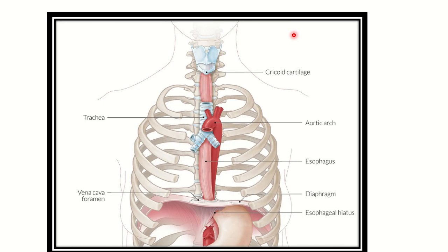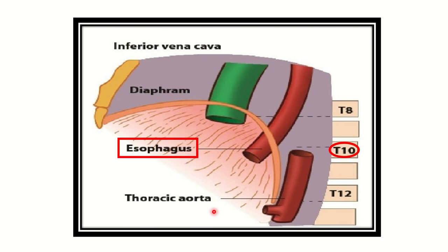Here we can see different structures in the figure. First, this is the trachea, and then the esophagus. We can see it passes into the abdominal cavity from the thorax through the diaphragm. We can also see another structure — this is the aorta, which also enters into the abdomen. So we have to find out at which vertebral level the esophagus enters the abdominal cavity.